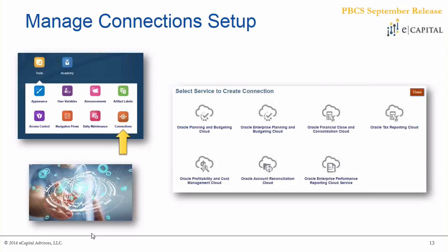Along with that, here are a couple of slides walking through how to set up your connections. Before you can create customized navigation flow tabs to go application to application, you must first select and create new connections. This can be done under the Tools navigation bar on your simplified interface. The services you can select to create a new connection align with the matrix shown on the prior slide.